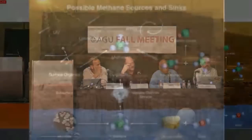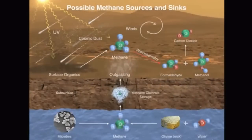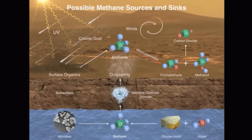I'll just walk you through this. I'm showing possible sources and sinks of methane. I'm going to focus on the three most likely scenarios to explain the methane that we're seeing on Mars, both the background level as well as the spike.